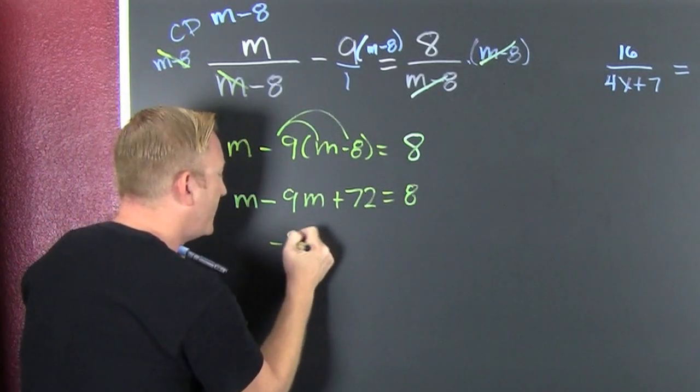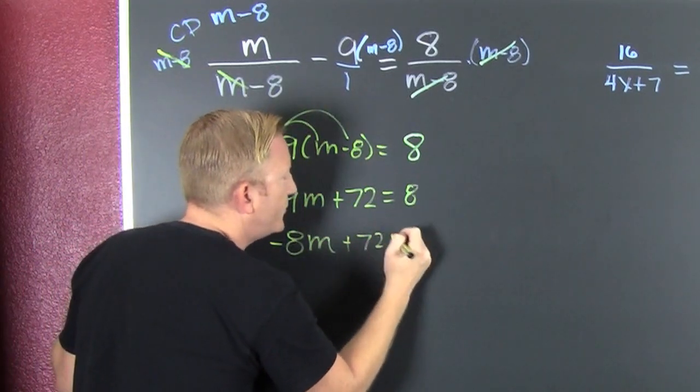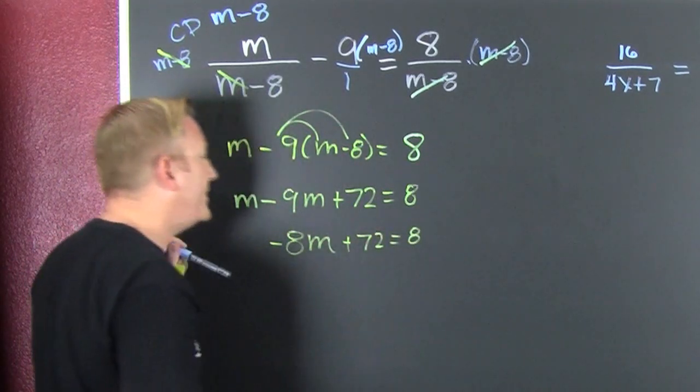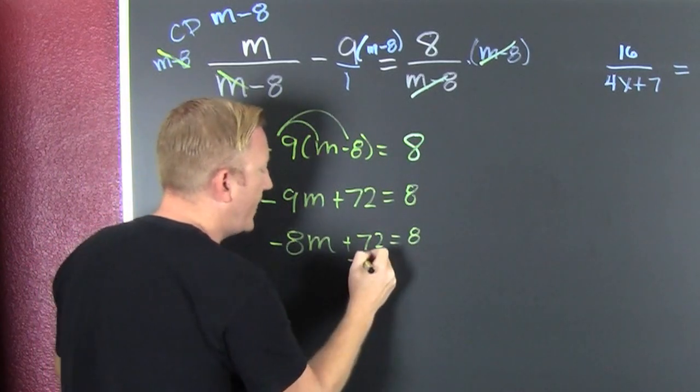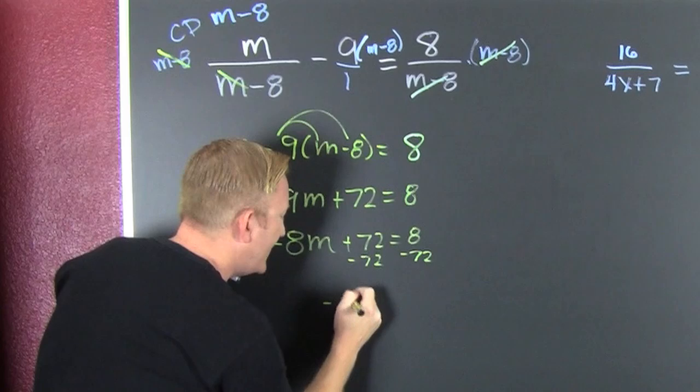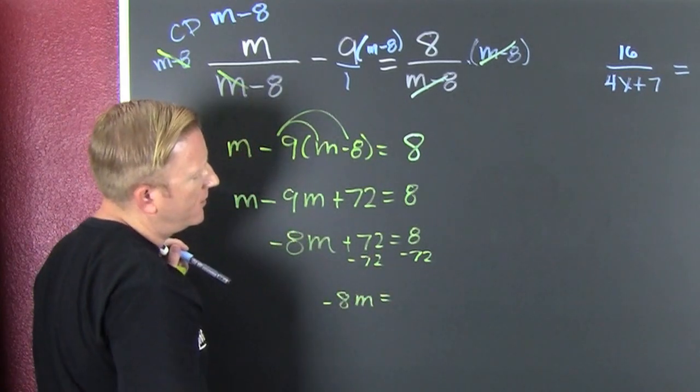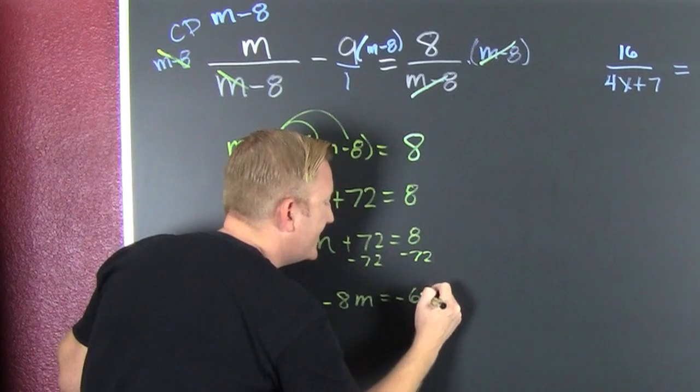And gather, collect, and combine. And that I find. That's m minus 8m plus 72. And that's 8. Now I subtract off the 72. Minus 72. Minus 72. So then minus 8m is minus 64.